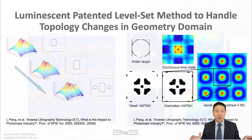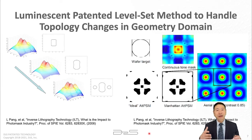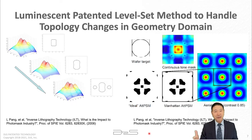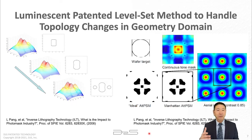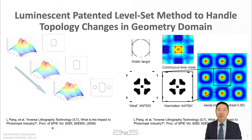There are many ILT papers with all kinds of different approaches, but three companies have published papers showing their full-chip ILT results. The first is Luminescent. Luminescent came up with a very smart method, originating from co-founder Professor Stan Osher, a famous mathematician who invented the level set method.